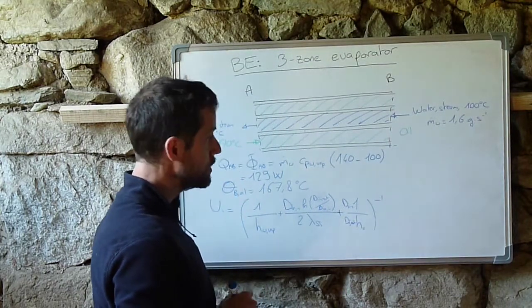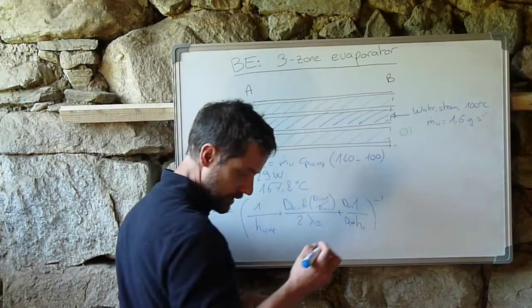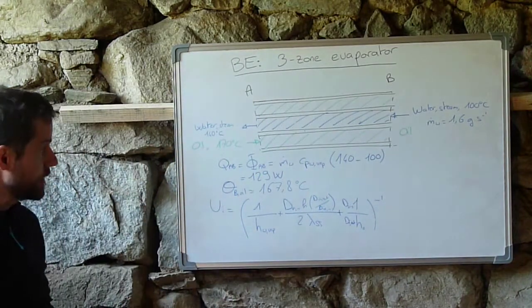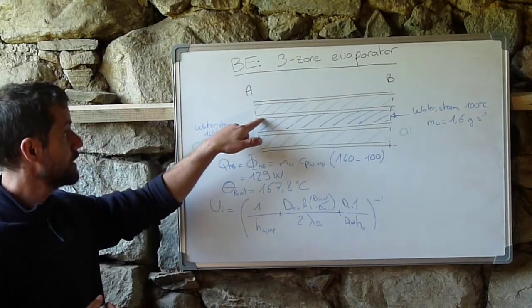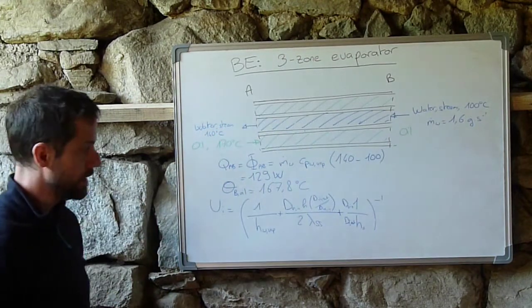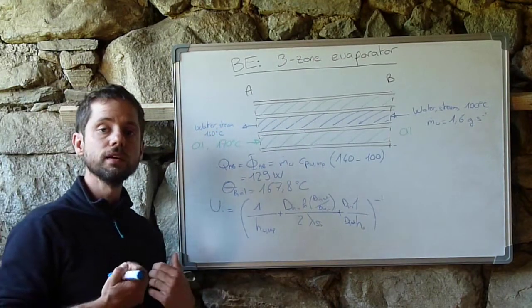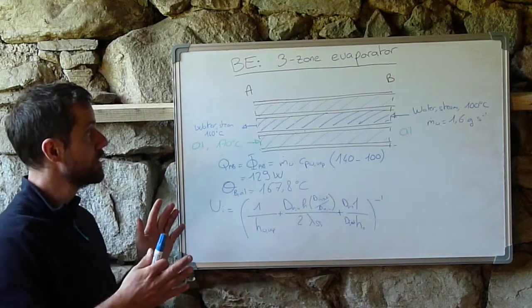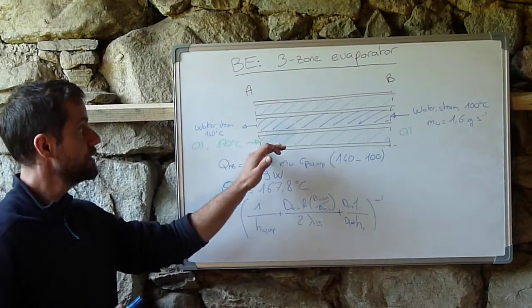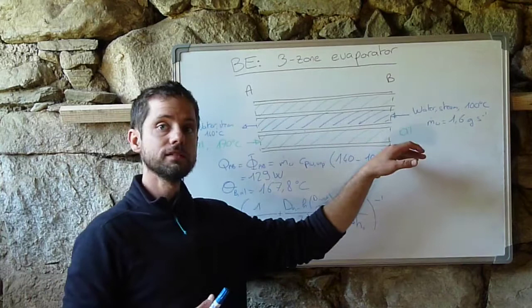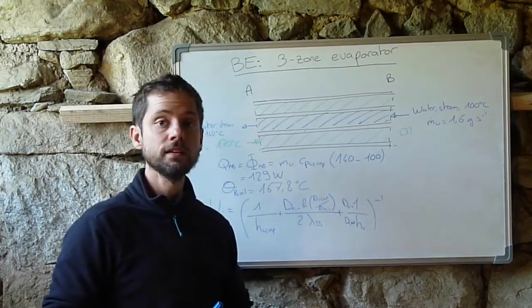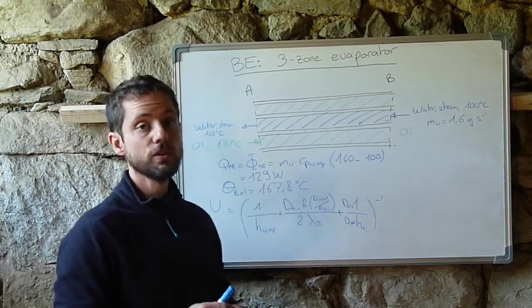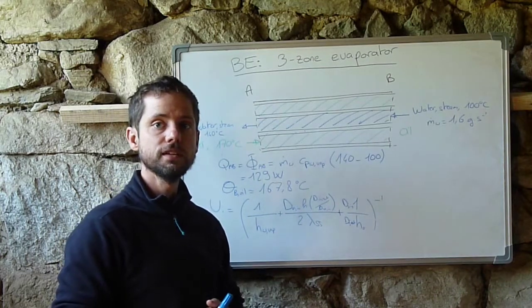And then you use this to calculate the heat transfer area at the internal part, so AI. And you can use this to calculate then the length that is needed for this section of the double pipe heat exchanger. You do it for each of the sections and then you can have the global design for this heat exchanger.